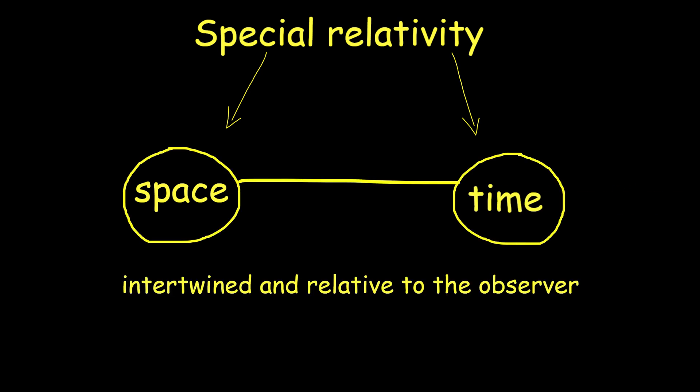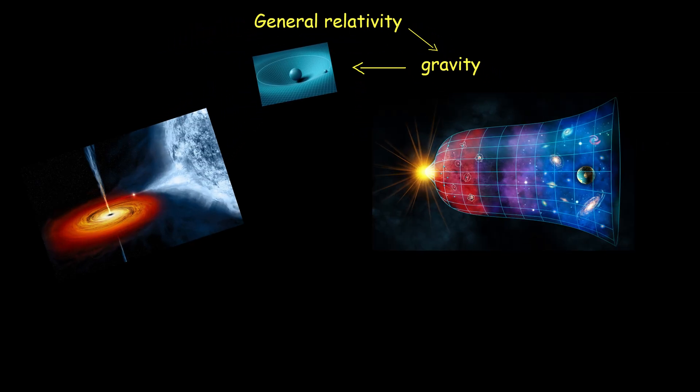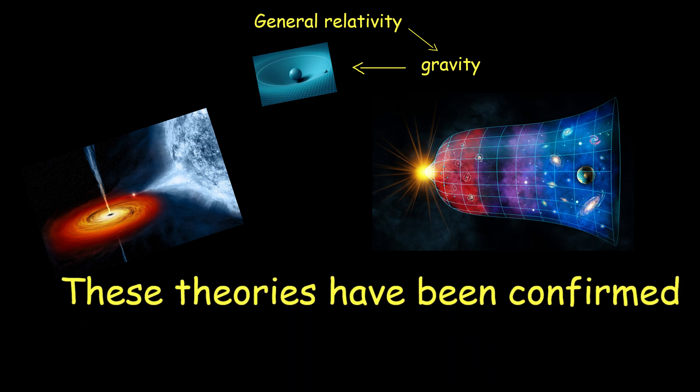Special relativity revolutionized the concepts of space and time, showing that they are intertwined and relative to the observer. General relativity provided a new understanding of gravity as the curvature of space-time, explaining phenomena from the bending of light to the expansion of the universe. These theories have been confirmed by countless experiments and observations and remain fundamental to modern physics.